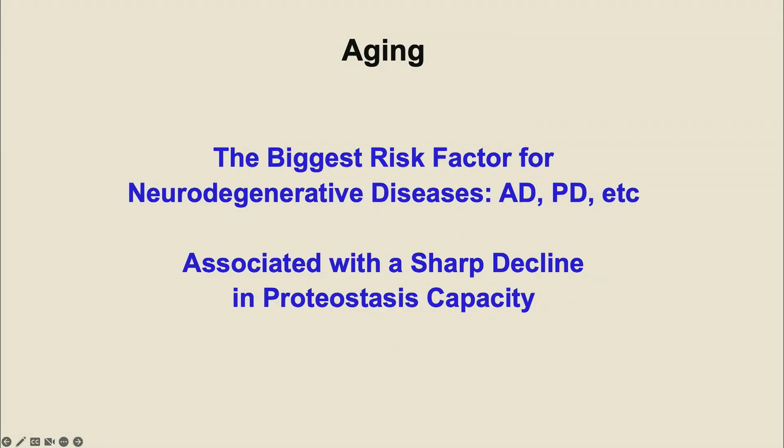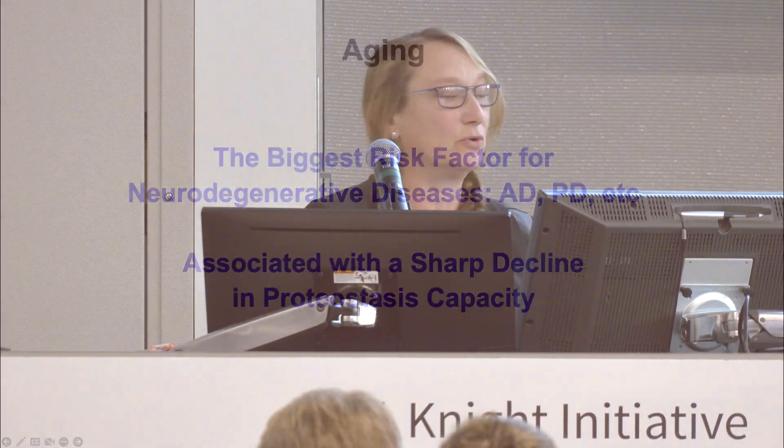I don't think I need to tell you that aging is the biggest risk factor for neurodegenerative diseases, including Alzheimer's, Parkinson's, as well as many other diseases that are actually linked to protein aggregation and formation of amyloids.